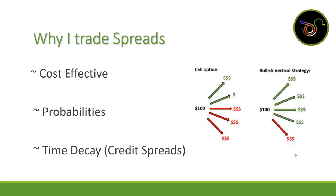Now a bit more on why I like to trade spreads compared to outright calls and puts. First, it's very cost effective. Trading spreads is a great way for smaller accounts to get into larger cap stocks like Amazon or Google without needing as much capital. Those premiums can be huge, but with spreads you can use a $1 or $2 wide spread, enter the trade with less capital, and still catch the moves as stocks go higher or lower.